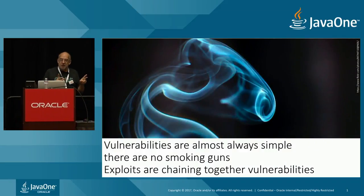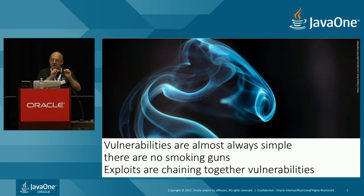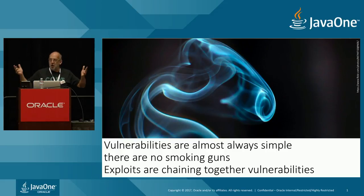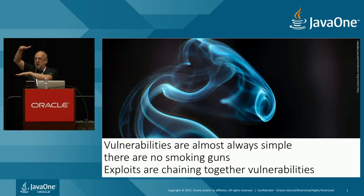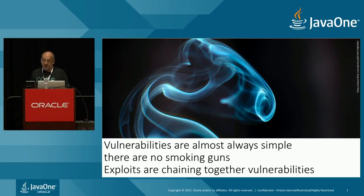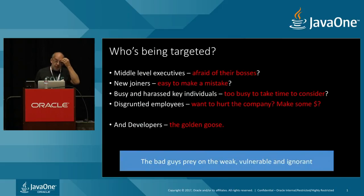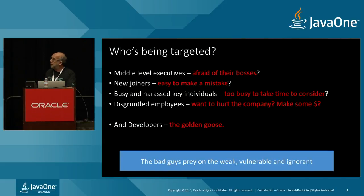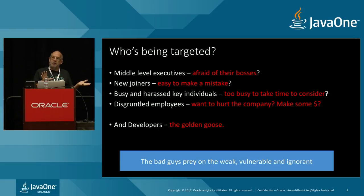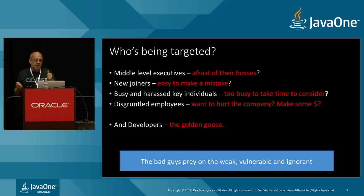The thing I want you to start realizing is: vulnerabilities are almost always simple — very tiny errors. There are no massive explosions. You wouldn't look at a piece of code and immediately go 'that's a security vulnerability.' It's always the joining together that makes it into an exploit. You're not thinking about it, and you're probably writing this stuff without knowing it.